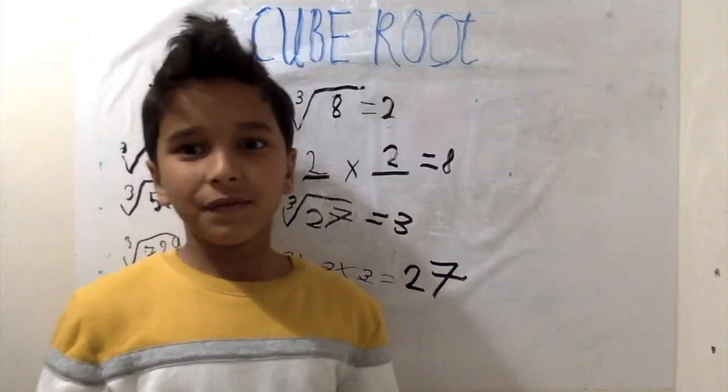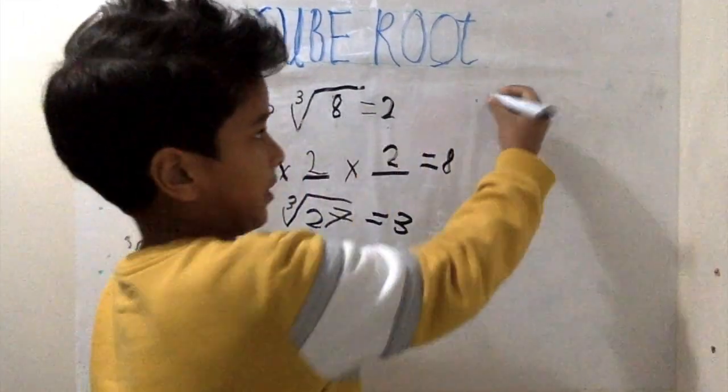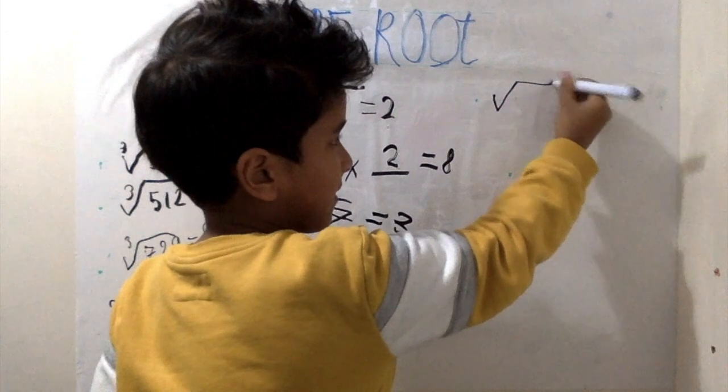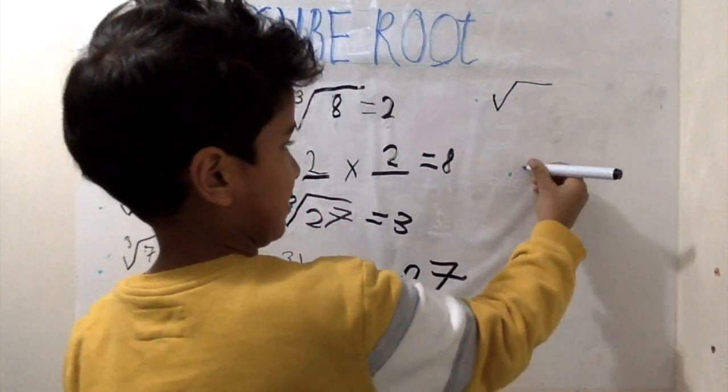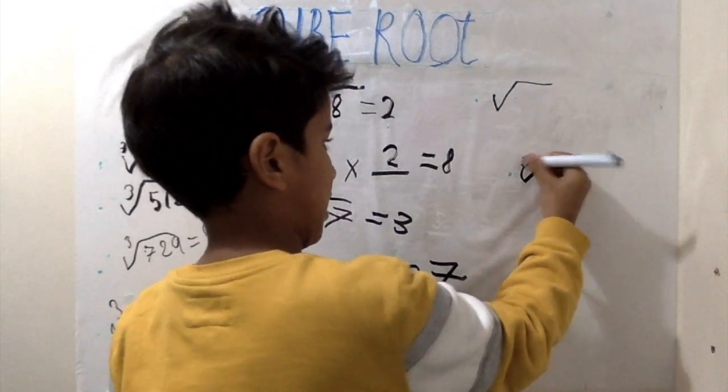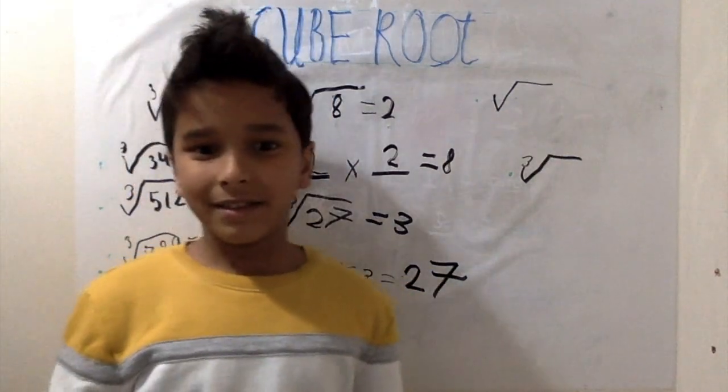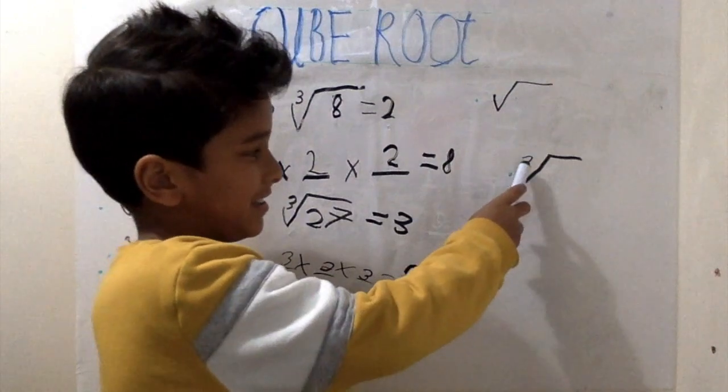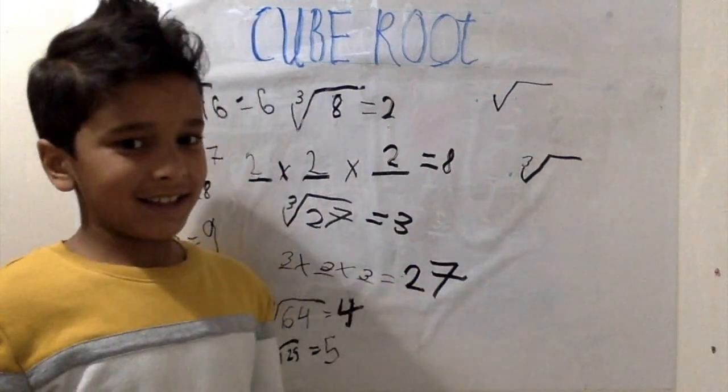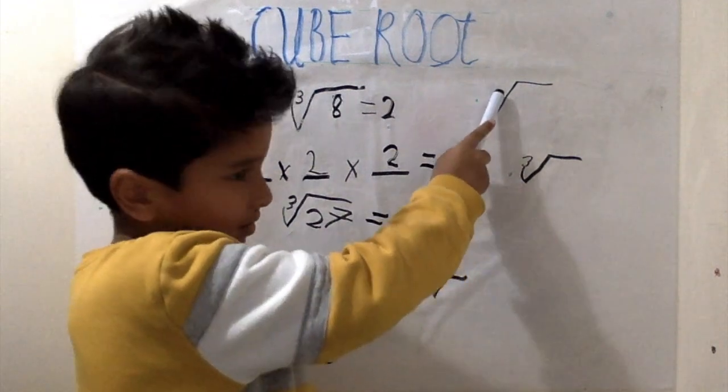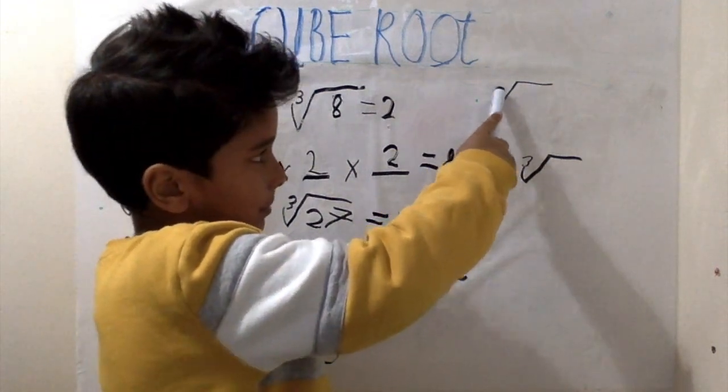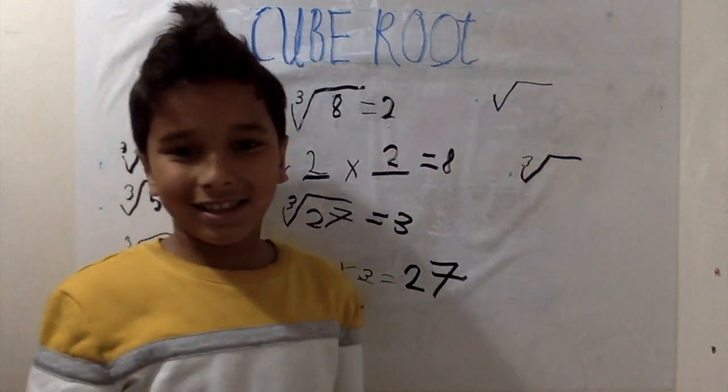Remember the difference between square root and cube root. The magic little 3 here tells you that it's a cube root, but this one has no number, so it tells you that it's a square root.